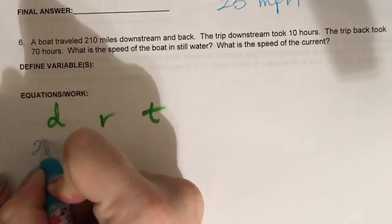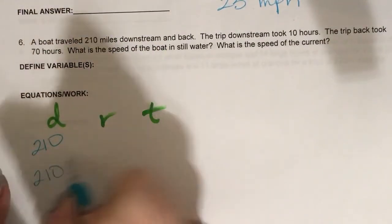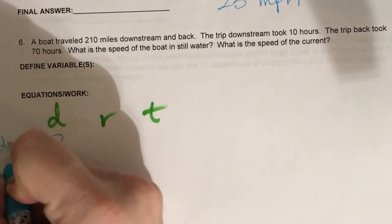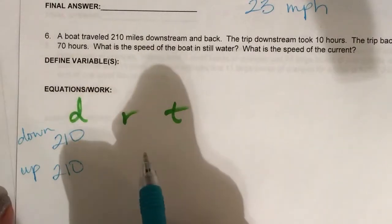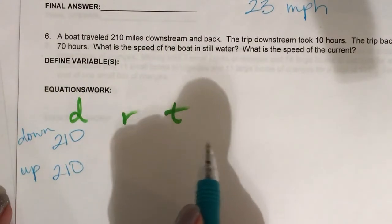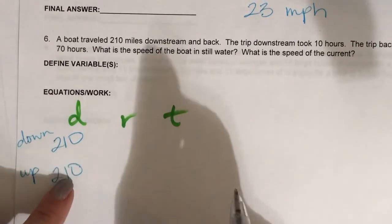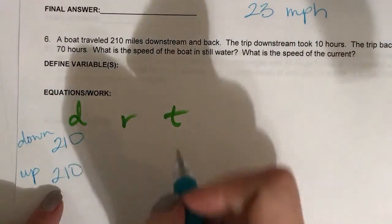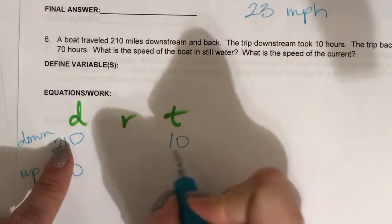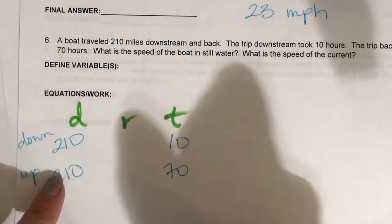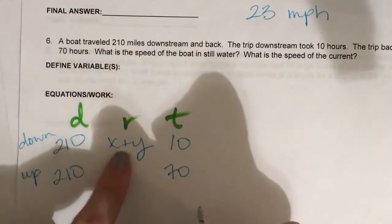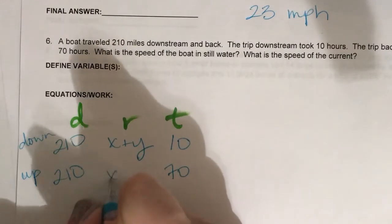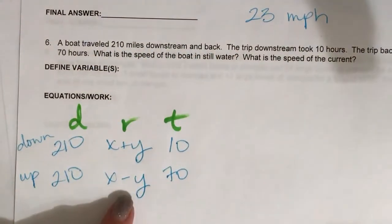There are different ways you could think about this problem. We're going downstream and then back upstream, and we know that it's 210 miles both ways. The trip downstream took 10 hours and the trip back took 70 hours. The rate downstream, you're being helped by the current, and upstream slowed down by the current.